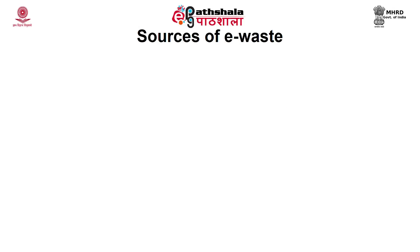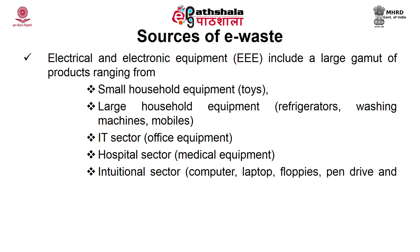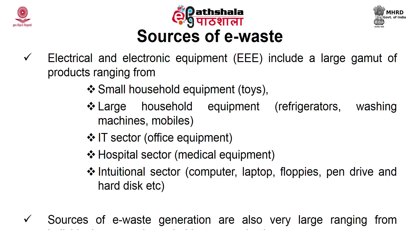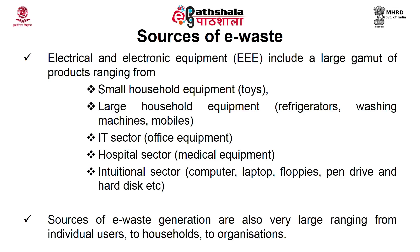Now let's look into the various sources of e-waste. The sources include small household equipment such as electronic toys. Second, large household equipment like refrigerators, PCs, washing machines, mobiles, etc. Third, the IT sector which includes office equipment. Fourth, the hospital sector which uses a lot of medical equipment. Finally, the institutional sector where laptops, computers, floppies, pen drives, and hard disks are discarded. The sources of e-waste generation range from individual users to households to organizations, covering various sectors.